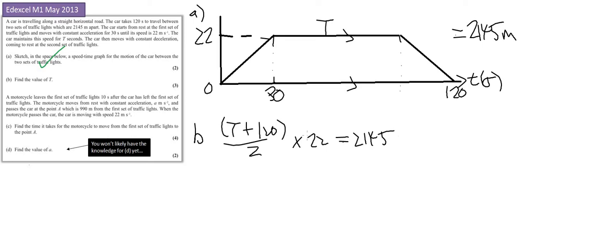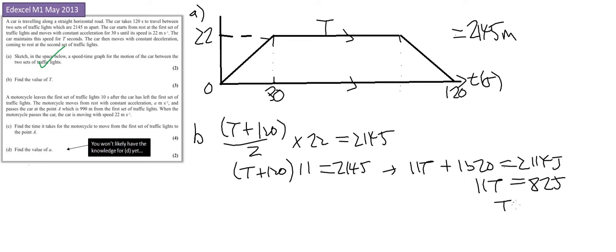Okay, so two times 22, that's 11. So that's 11 times t plus 120 equals 2145. That means we have 11t plus 1320 equals 2145, and that means 11t equals 825, so t equals 75.